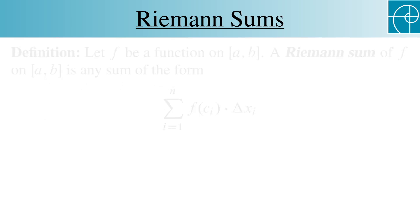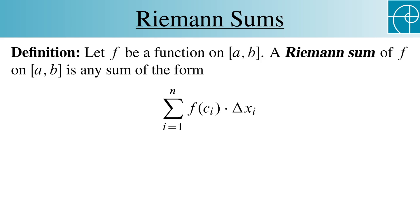Now for the definition. Let f be a function on ab. A Riemann sum of f on ab is any sum of this form for some partition of ab. Let's look at that form closely. For each i, we're evaluating f somewhere in the i-th subinterval and then multiplying it by the width of the i-th subinterval. This amounts to adding areas of rectangles.